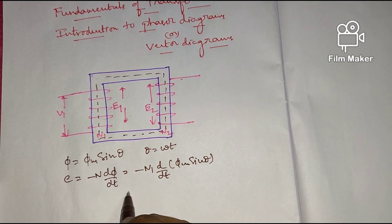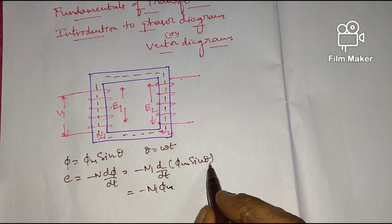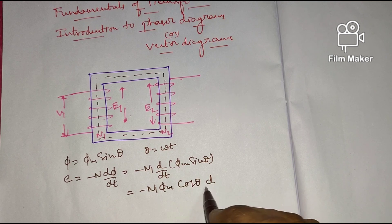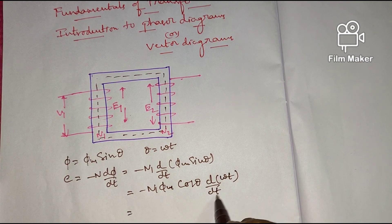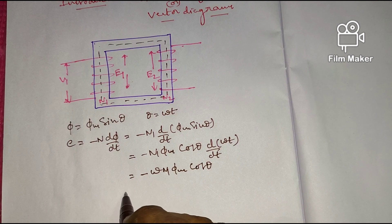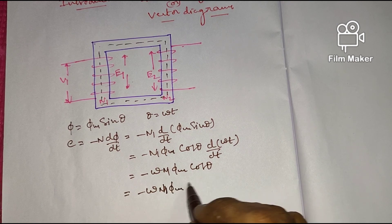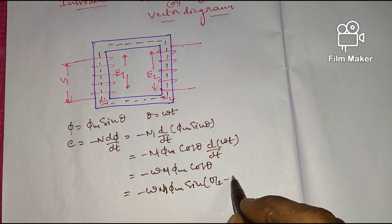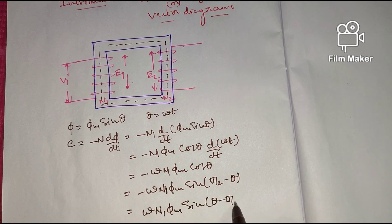Since phi_m is a constant, you can take it outside. This gives minus N1 times phi_m times d/dt of sin(theta). Applying the chain rule, d/dt of sin(theta) gives cos(theta) times d/dt of omega*t, which equals omega. So we get minus omega * N1 * phi_m * cos(theta). This can be rewritten as minus omega * N1 * phi_m * cos(theta), and using the identity, cos(theta) equals sin(pi/2 minus theta), the minus sign is taken inside to give omega * N1 * phi_m * sin(theta minus pi/2).